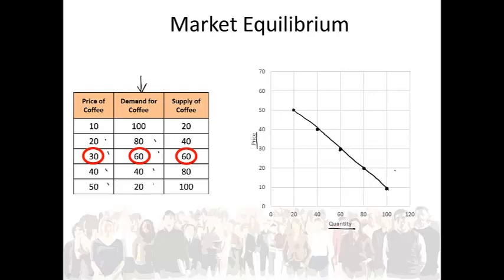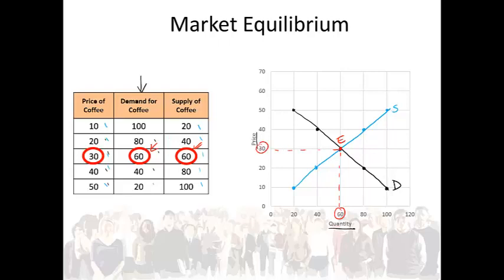Now we can connect these dots to get the market demand curve for coffee. Let's do supply in a different color. At a market price of 10 rand people will supply 20 units of coffee. At a market price of 20 rand producers will supply 40 units of coffee. At a market price of 30 rand producers will supply 60 units of coffee. At a price of 40 rand producers will supply 80 units, and at 50 rand producers will supply 100 units of coffee. Let's connect the dots to get our market supply curve. Now we can see the equilibrium quantity is 60 and the equilibrium price is 30 rand, the same as the information given in the table.